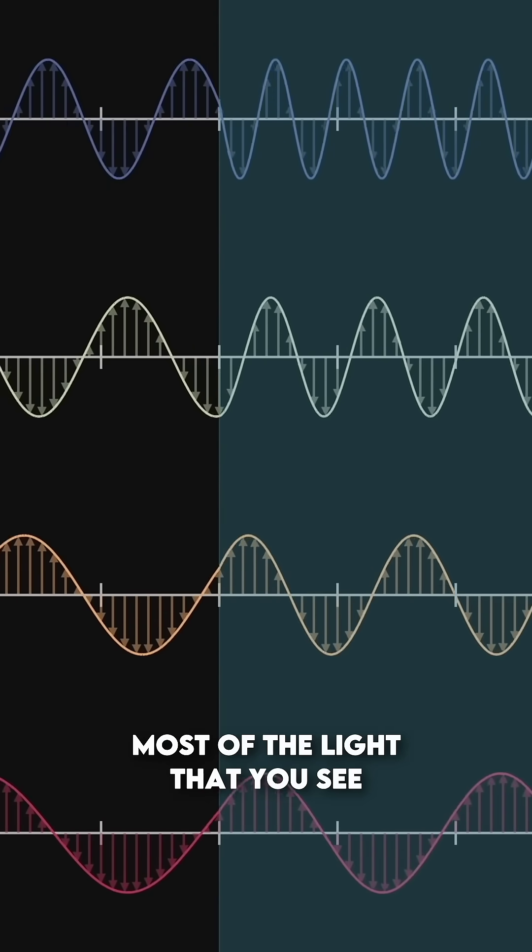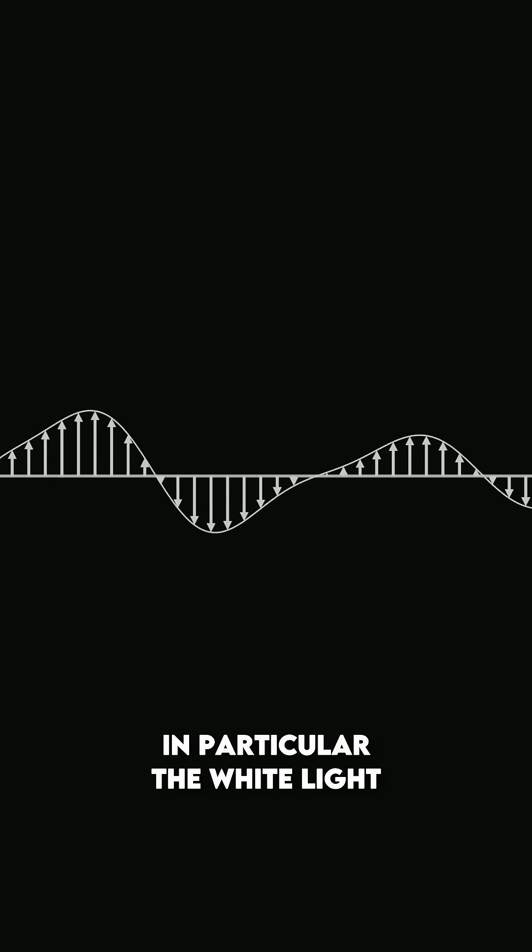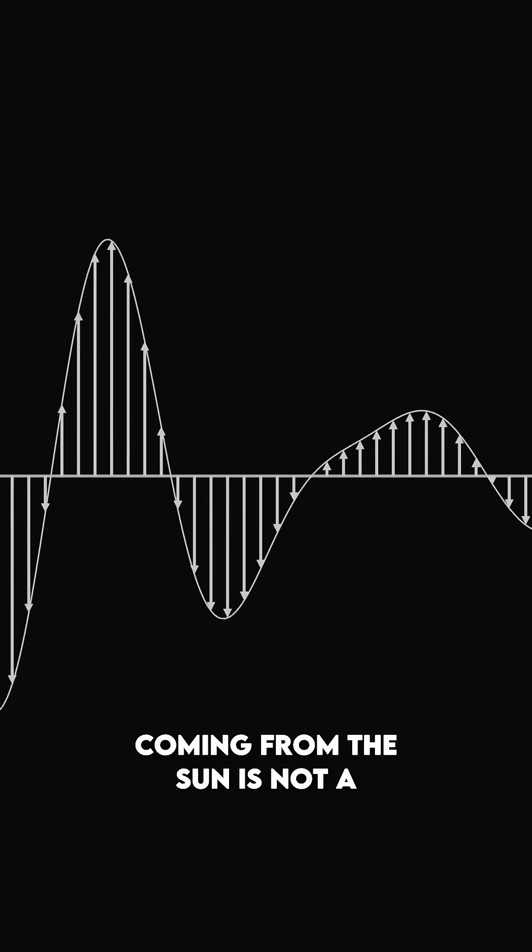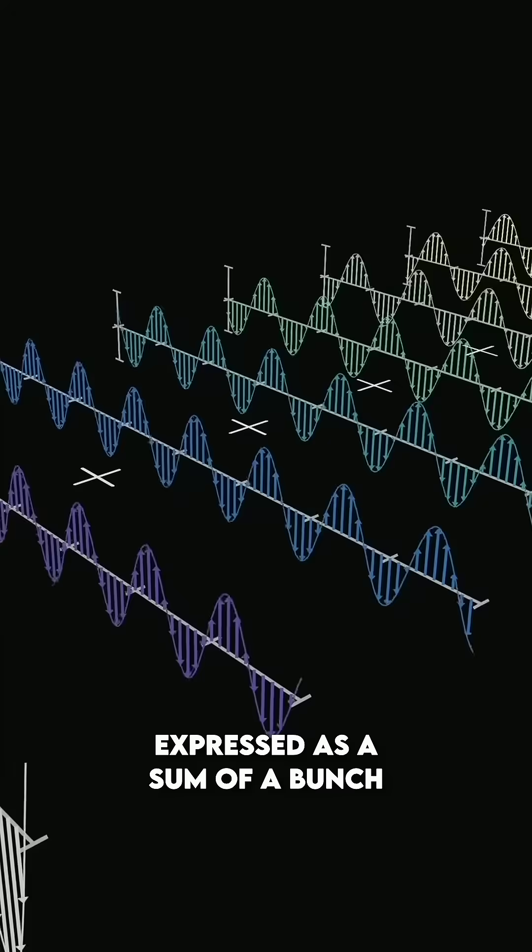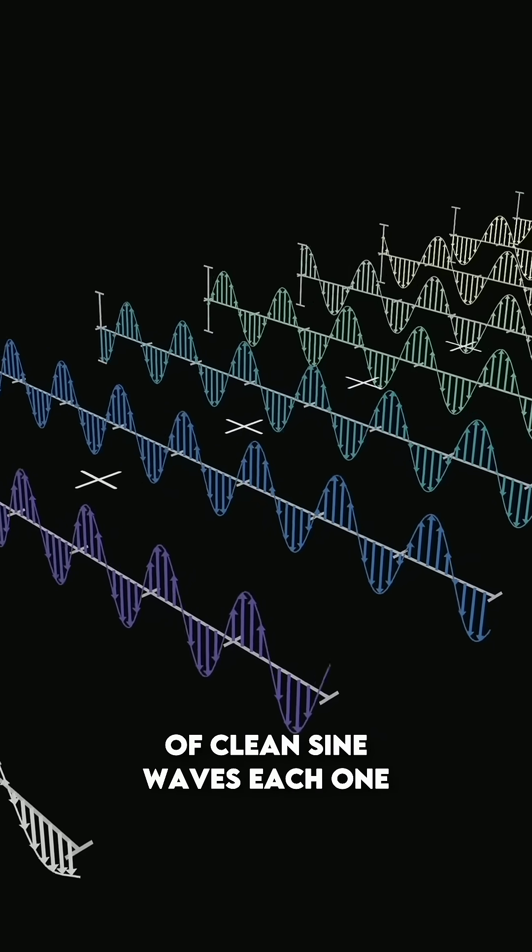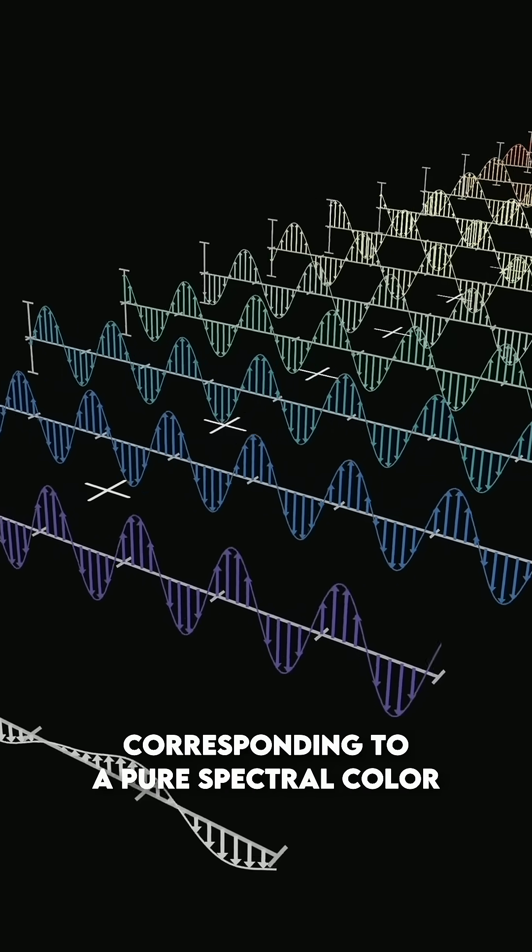Now, most of the light that you see is not a clean, pure sine wave. In particular, the white light coming from the sun is not a clean sine wave. It's something much messier, but it can be expressed as a sum of a bunch of clean sine waves, each one corresponding to a pure spectral color.